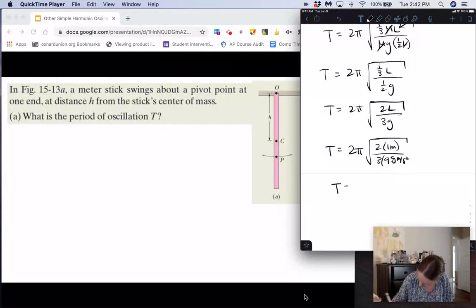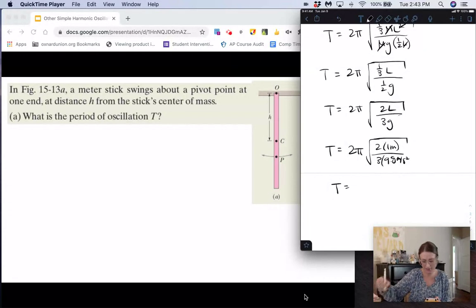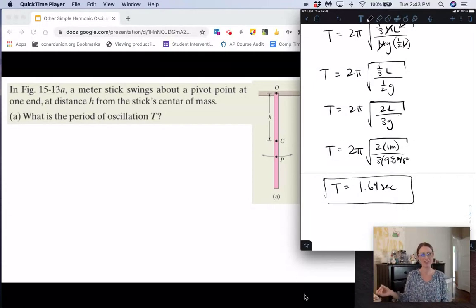and so we get period is equal to 2 divided by 3 times 9.8. Then I take the square root of that number, multiply by 2π, and we get about 1.64 seconds for our period of the pendulum.